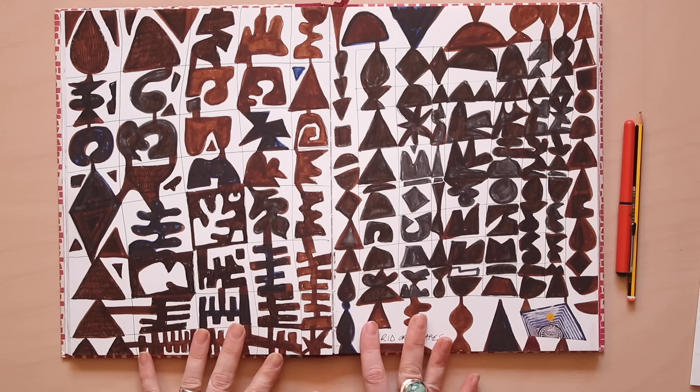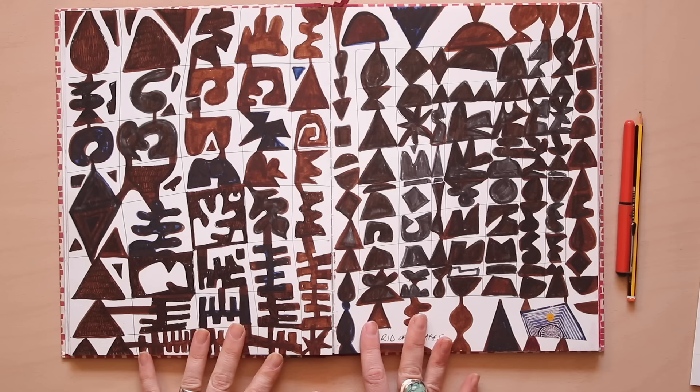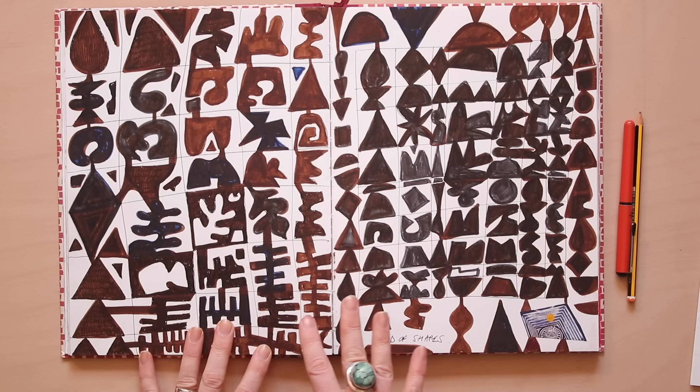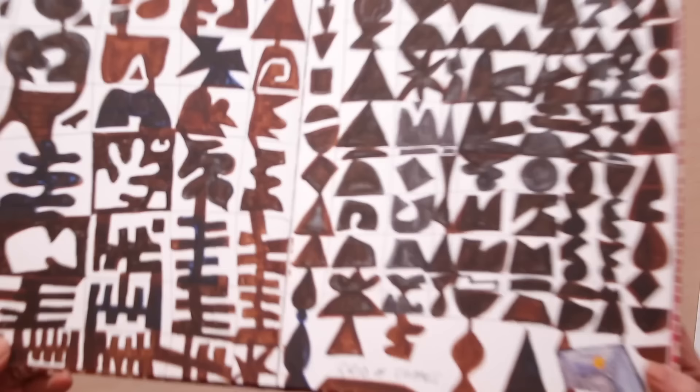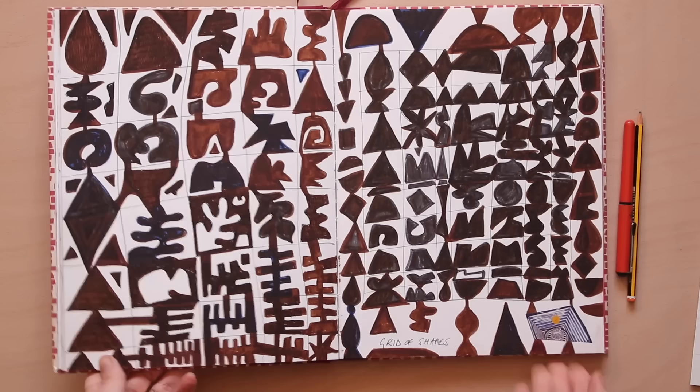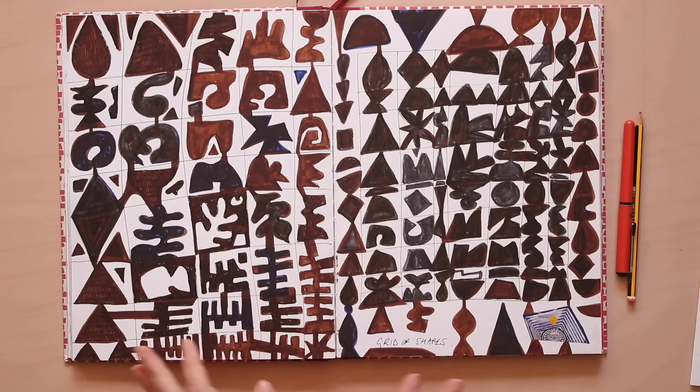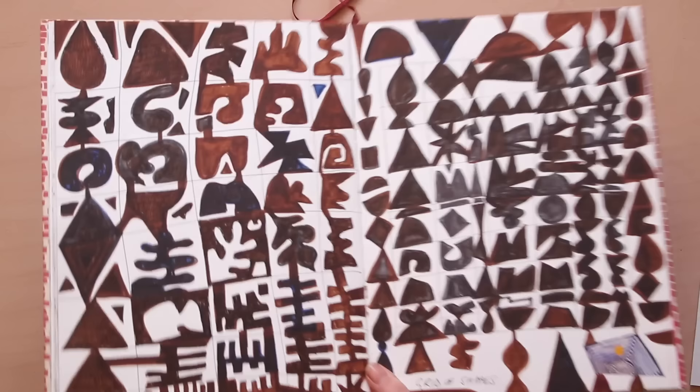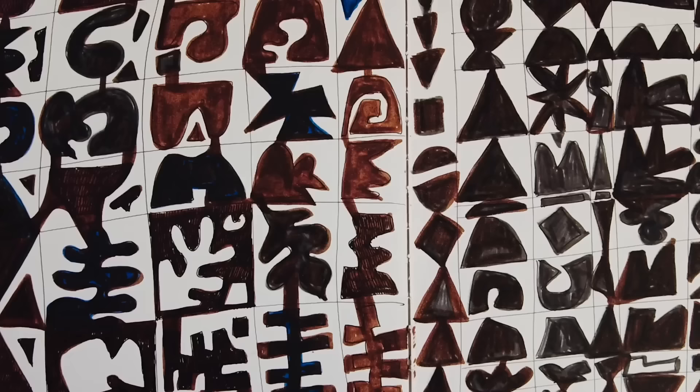So the first exercise I'm going to recommend that we do is to create a grid and fill them with shapes. So this is a page from my sketchbook. Now it's not a finished composition, it is really just a wonky grid that I've put, and then I'm filling each little square with a shape. I've just drawn a very wonky grid on a piece of paper, and now I'm going to put a different shape in each square.